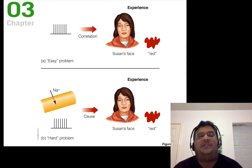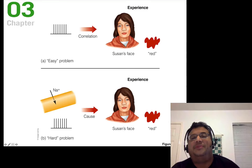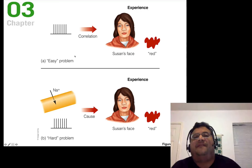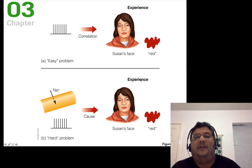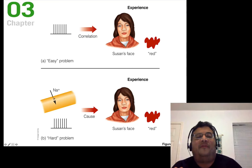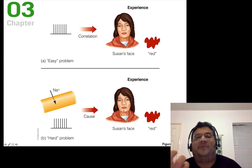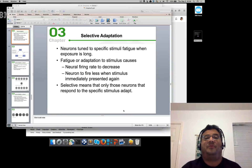We can find cells that fire whenever we see somebody's face or the color red — that's the easy problem, within our state of the art. The hard problem is: how do we go from the flow of ions and the firing of cells all the way to the experience? How does all that neural activity lead to the perceptions you're seeing — where does the subjective experience come from? That's the hard problem of consciousness.